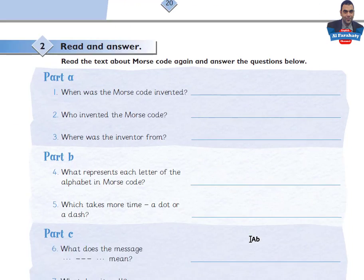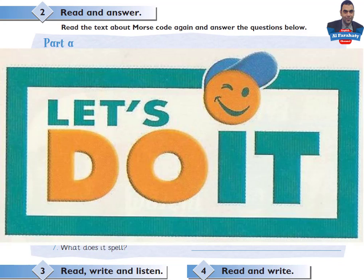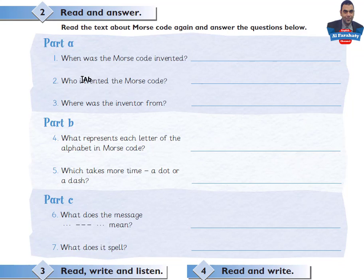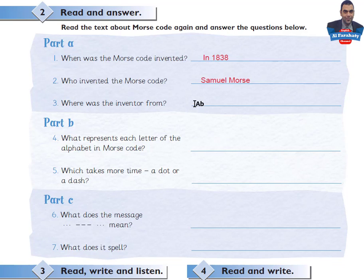Page 21, Activity 2: Read and answer. I will give you time to answer these questions. Use your pencil and write short answers. Read the text about Morse code again, then come back to check your answers. Part A: When was the Morse code invented? In 1838. Who invented the Morse code? Samuel Morse. Where was the inventor from? America.